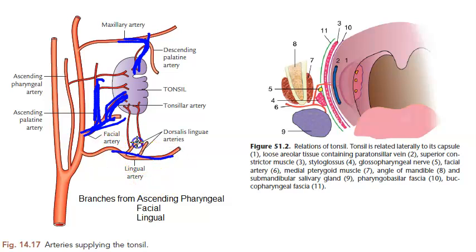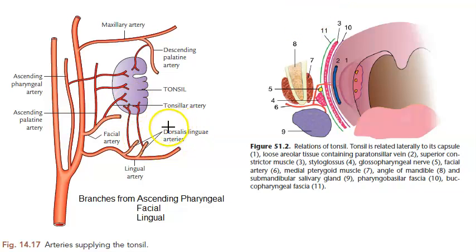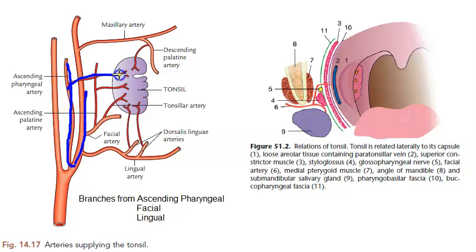From the lingual artery you have the dorsolingual arteries. Also, the external carotid artery has a branch called the ascending pharyngeal artery, and from that you also have a branch to the tonsil. This is something very different you have to remember.